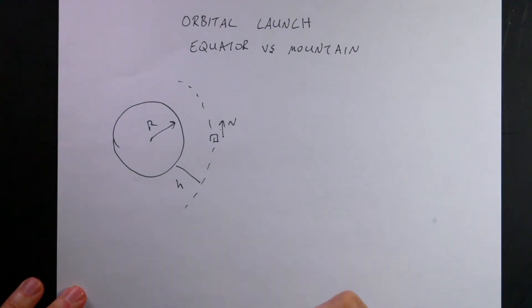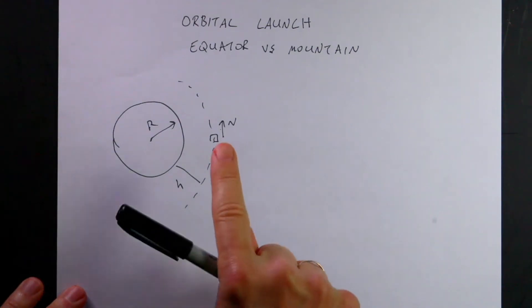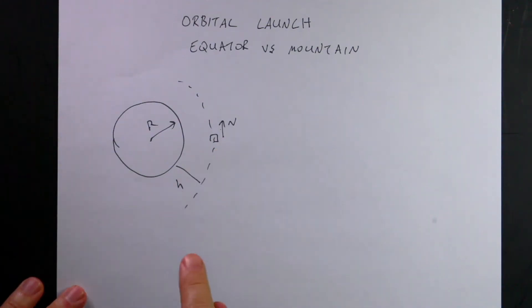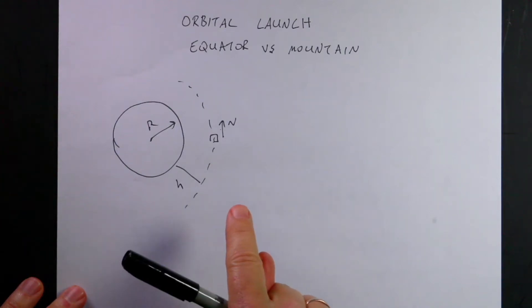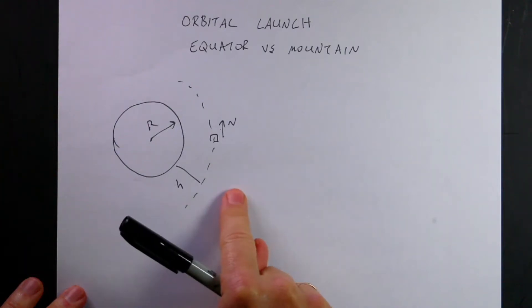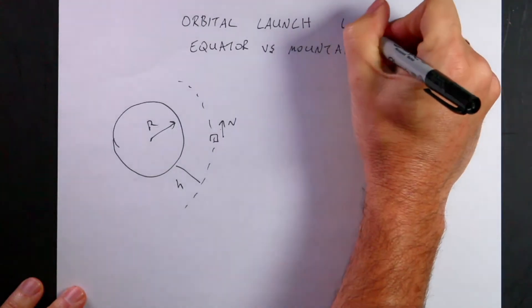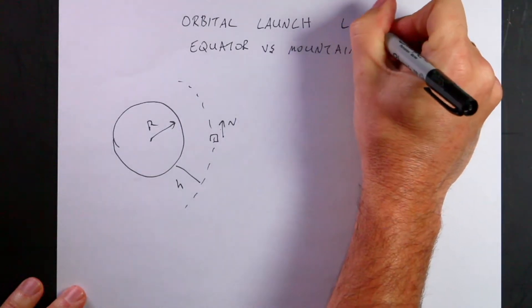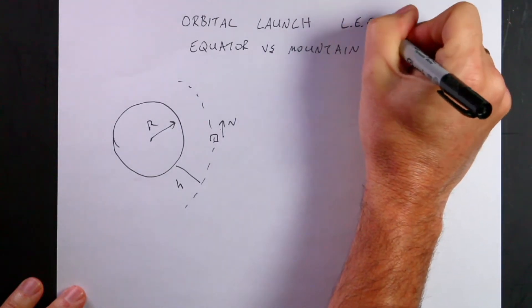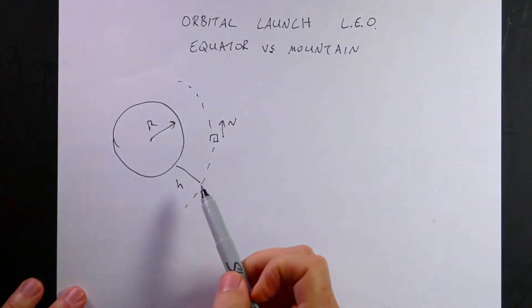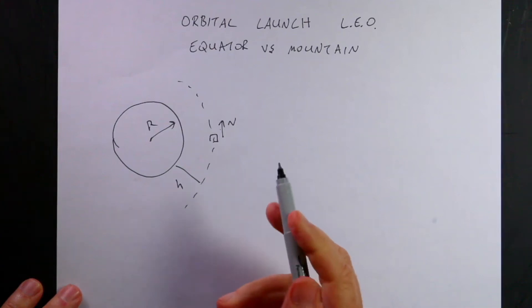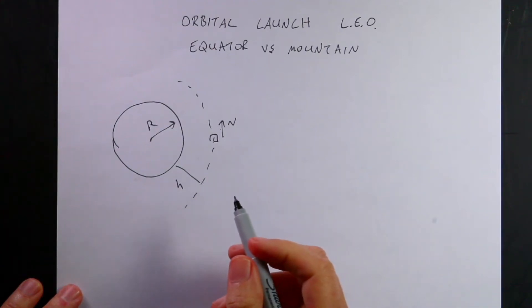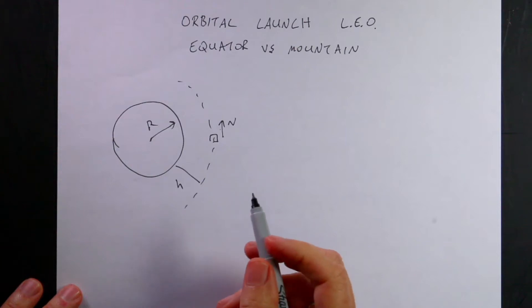So here is the question: would it be better to launch a spacecraft into low Earth orbit from the equator or from a mountain? Which one's better? Let's do it — let's just calculate that and see what will happen.